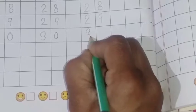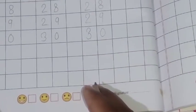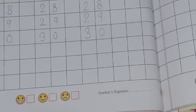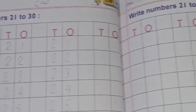30, what is spelling 30? T-H-I-R-T-Y, thirty. Okay. 21 to 30 numbers.